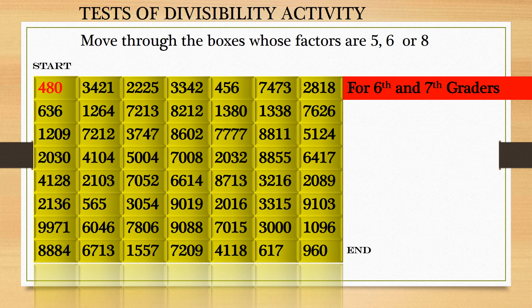This activity enables children to recognize multiples and also the test of divisibility. To play this game, do horizontal or vertical moves. Starting from 480, move to the next box — 636 or 3431. Check if 636 is a multiple of any of these numbers: 5, 6, or 8. By applying the test of divisibility, 636 is not a multiple of 5 or 8 but it is a multiple of 6. Also, 3421 is not a multiple of any of these numbers. Hence, move to 636.